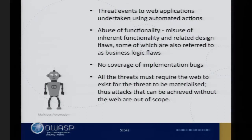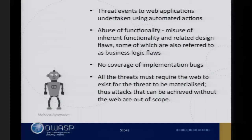Some things are excluded: anything to do with mobile apps, automation threats pre-deployment, something which affects the website but isn't necessarily web — such as e-commerce return fraud — anything to do with other layer 7 protocols such as SMTP or FTP, DNS type issues around web applications, and any network or physical environmental attacks.